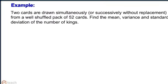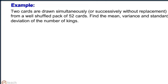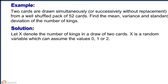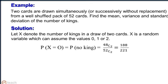Example: Two cards are drawn simultaneously or successively without replacement from a well-shuffled pack of 52 cards. Find the mean, variance, and standard deviation of the number of kings. Solution: Let x denote the number of kings in a draw of 2 cards. X is a random variable which can assume the values 0, 1, or 2. Probability of x equal to 0, that is no king is obtained, equals 48C2 divided by 52C2, that is 188 by 221.